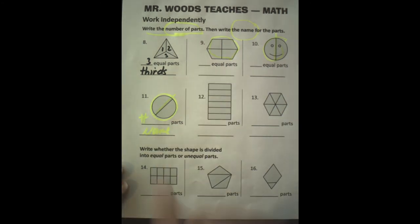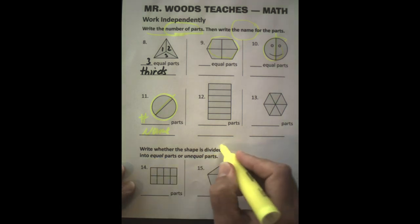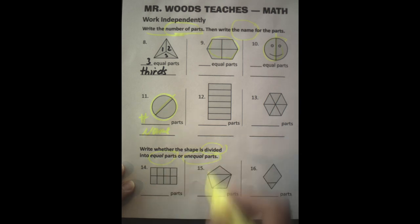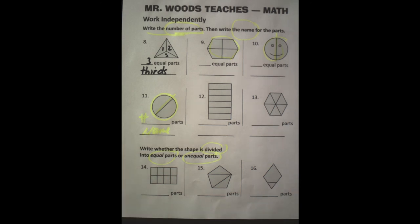Down here in this section, we're looking for whether the shape is divided into equal parts or unequal parts. So remember what we did just prior to this is we're looking to see if the pieces are the same size or not. If they're the same size, they're equal. If they're not the same size, they're unequal parts.